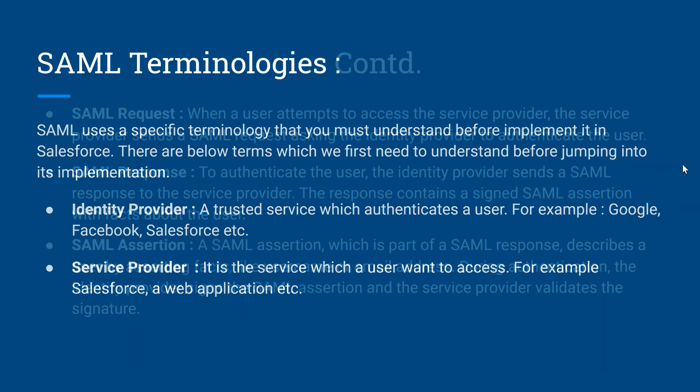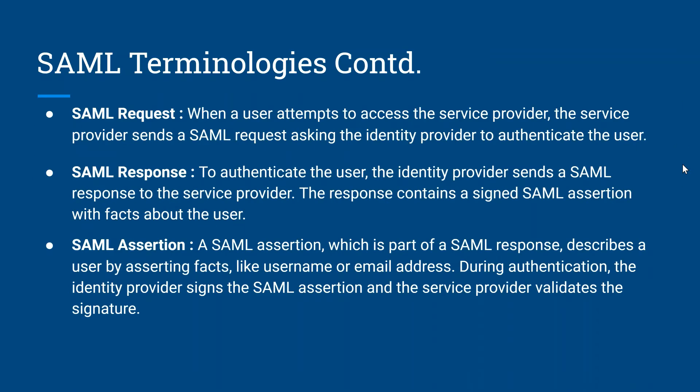The next one is SAML request. When a user attempts to access the service provider, the service provider sends a SAML request asking the identity provider to authenticate the user. For example, if you want to access Salesforce and on the back end you have Google as your identity provider, then Salesforce will send a SAML request to Google, which will authenticate the user.